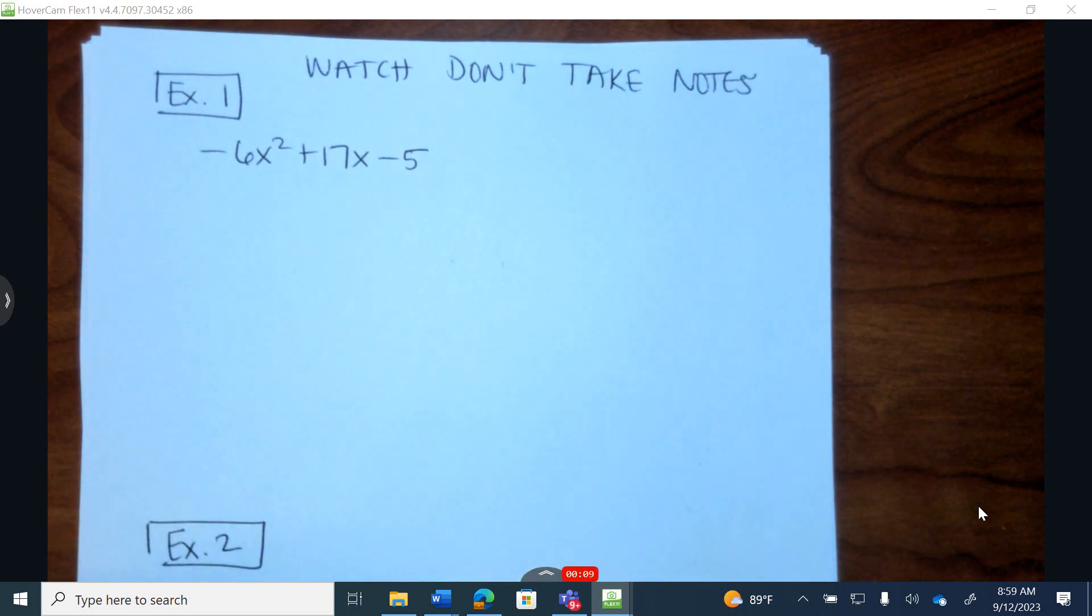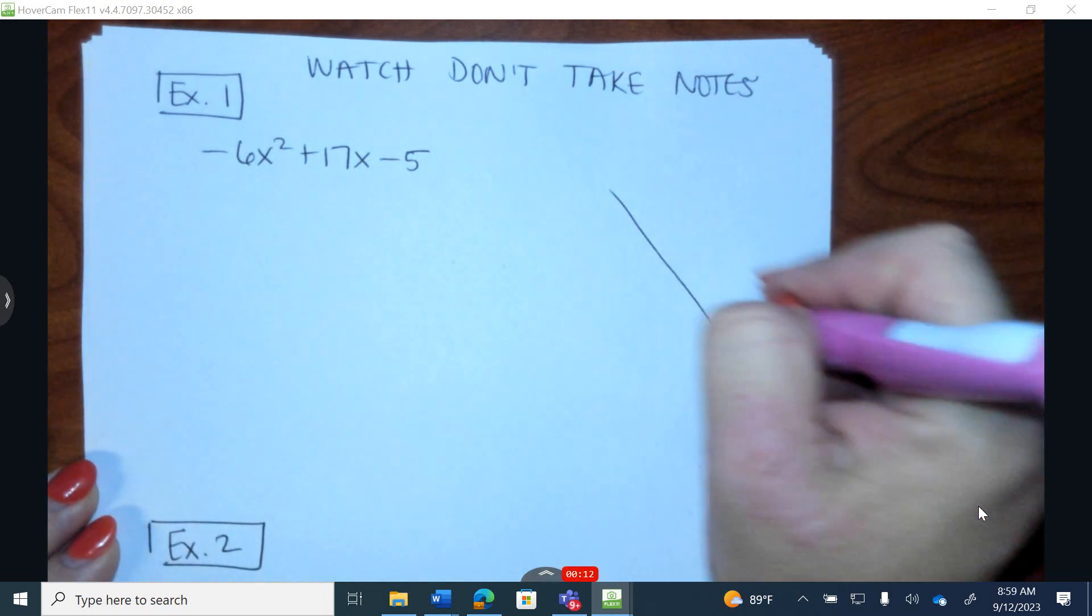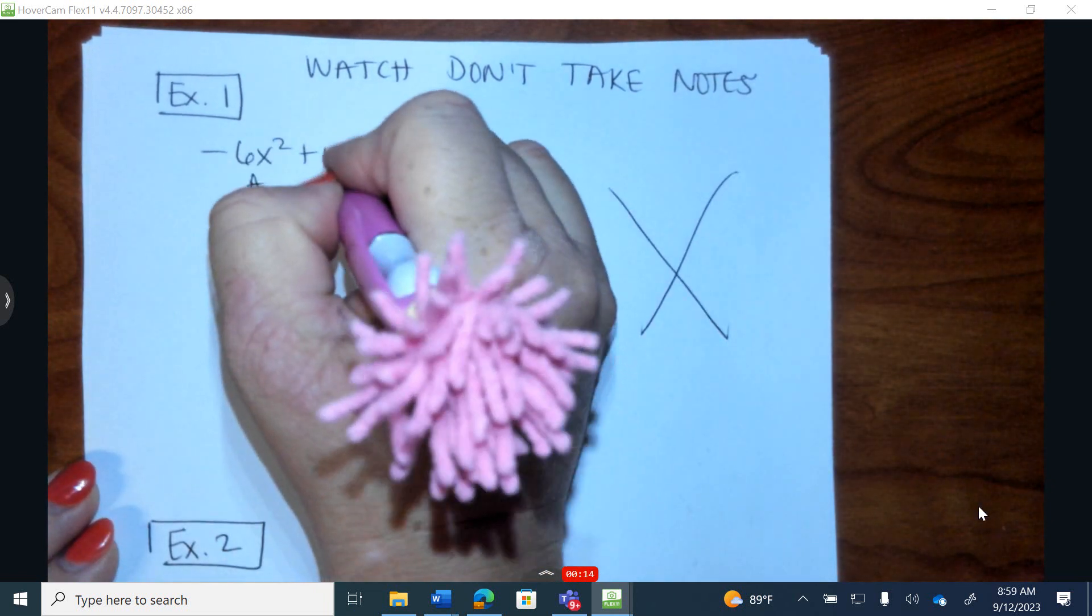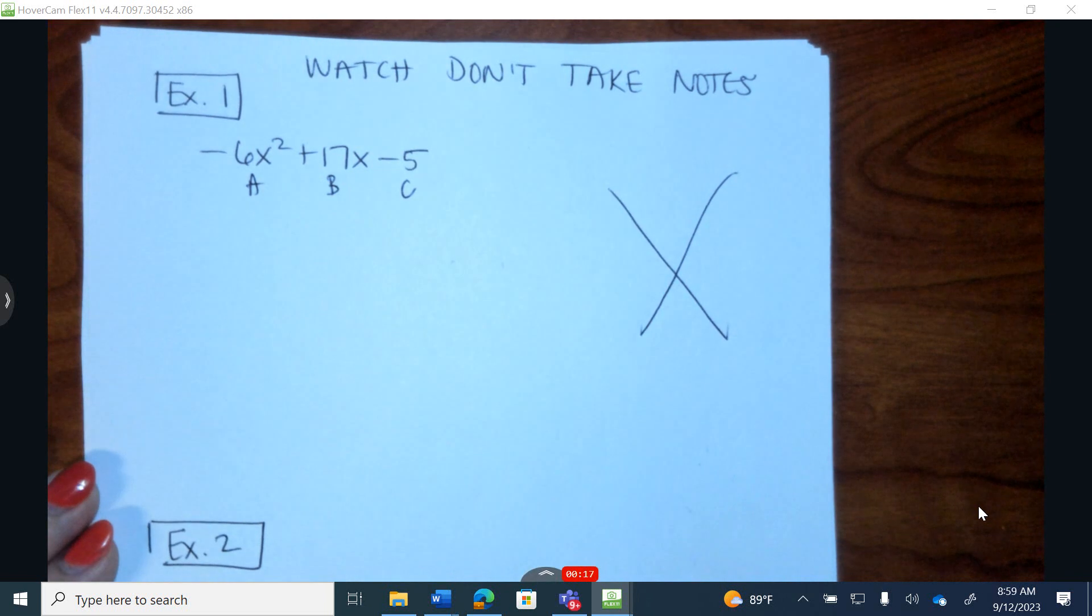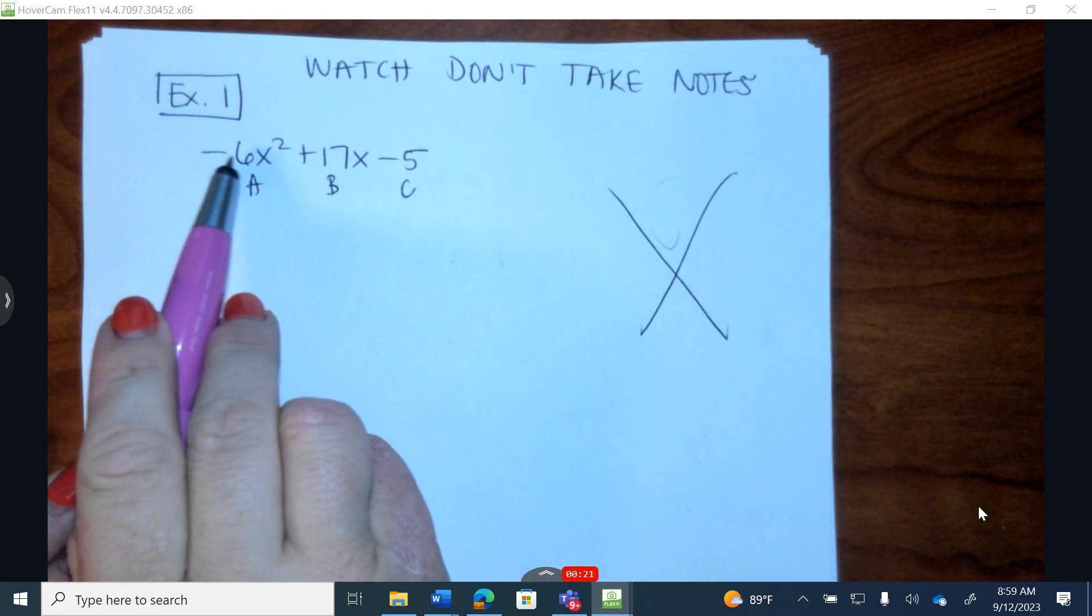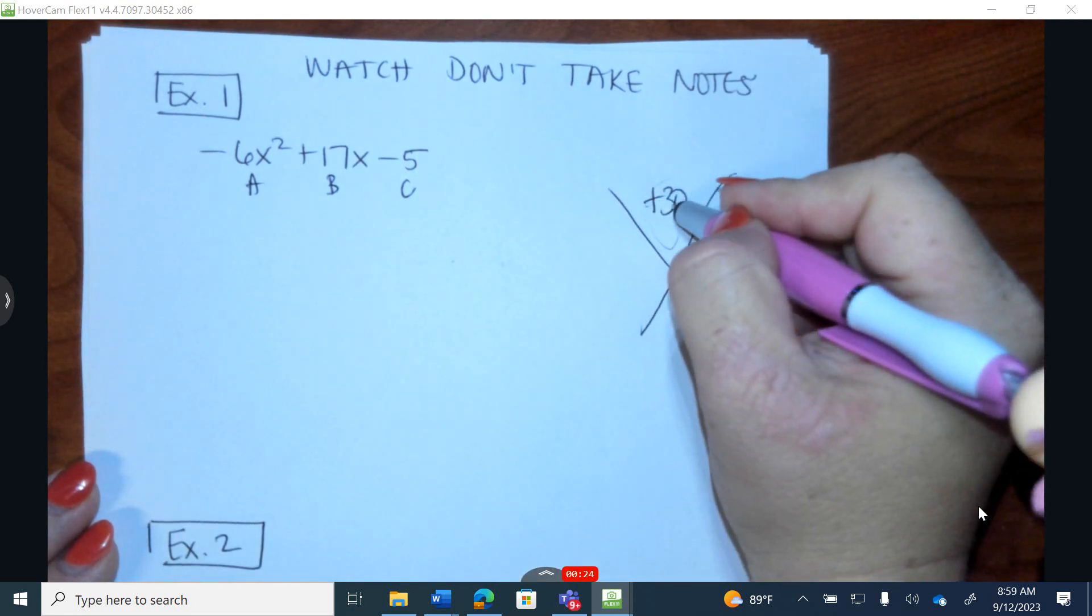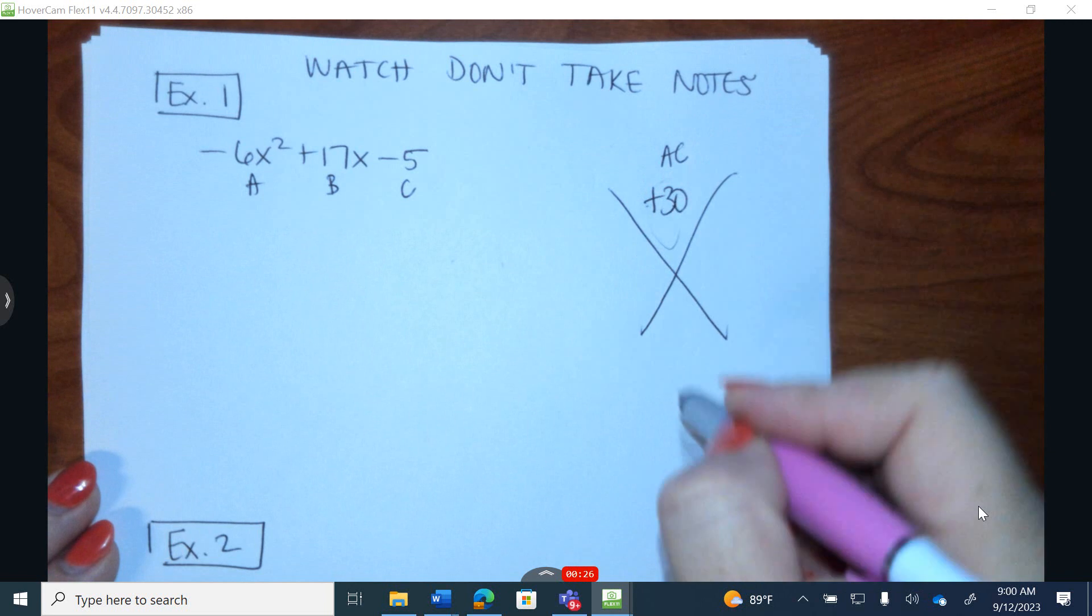I'm going to use the AC by grouping method in order to factor this trinomial. This is your A term, your B term, and your C term. In this position, I'll always take A times C. Negative 6 times negative 5 is a positive 30, and I will include the sign. This is always A times C.